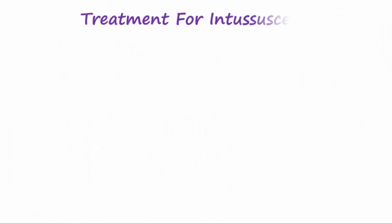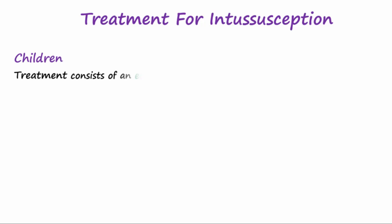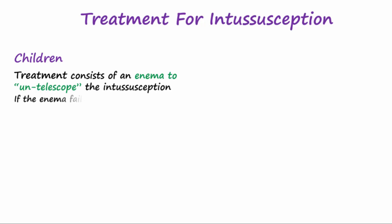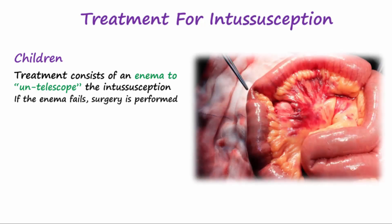Treatment for intussusception in children is usually an enema, which is using air or liquid to create pressure in the intestine to un-telescope the intussusception. If enema fails, surgery is performed. In adults, treatment generally involves surgery and likely a resection of a portion of the bowel.